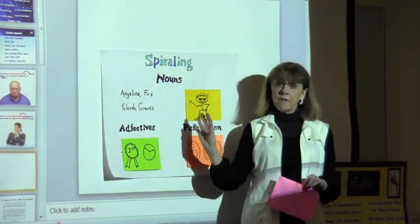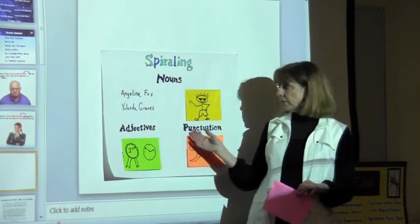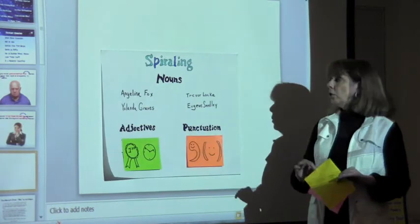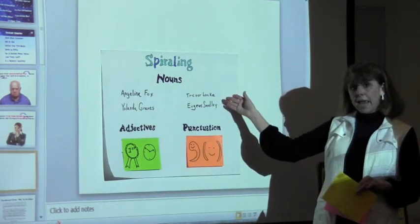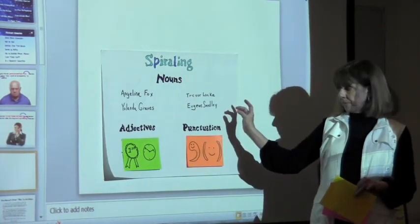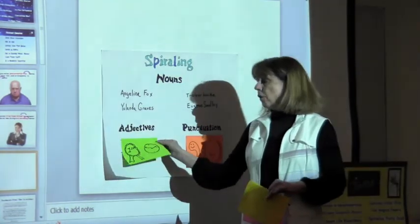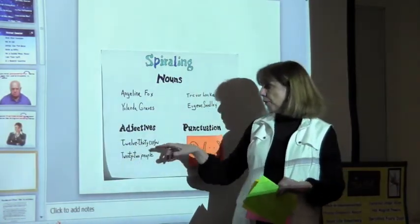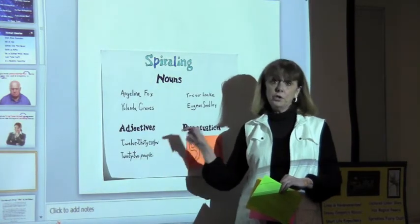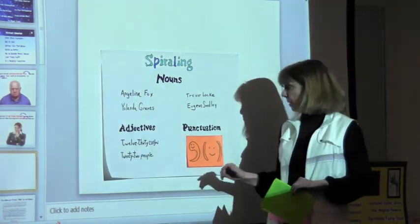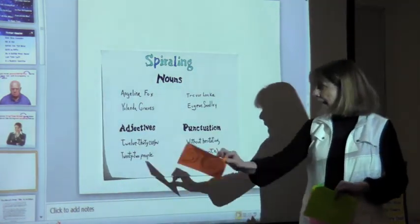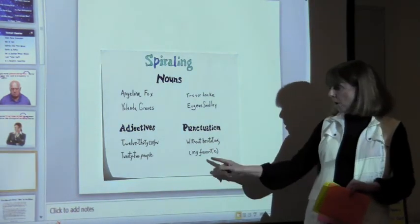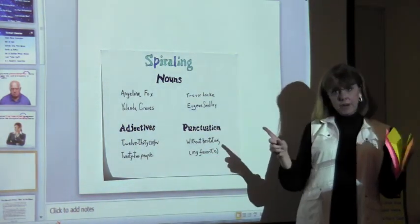Students who decide to work with the girl will choose between Angelina Fox and Yulanda Graves; for a boy, between Trevor Locke and Eugene Smedley. For hyphenated adjectives they can select '12:30 curfew' or '22 people,' and finally they'll select either 'without hesitation' with a comma, or 'my favorite' in parentheses.